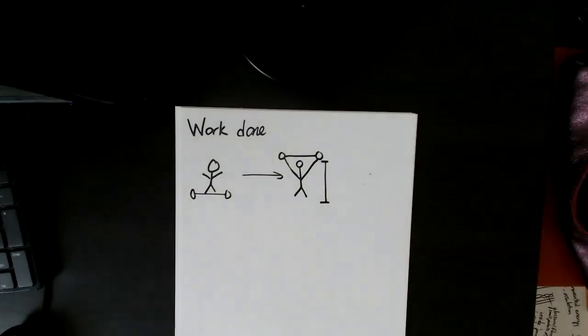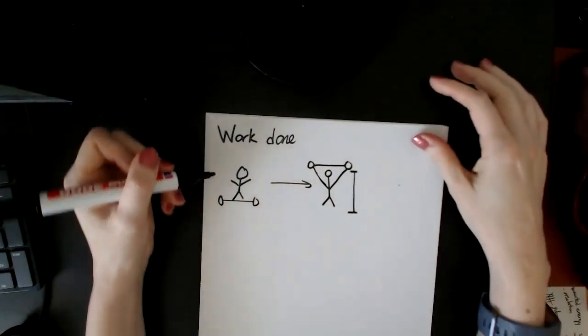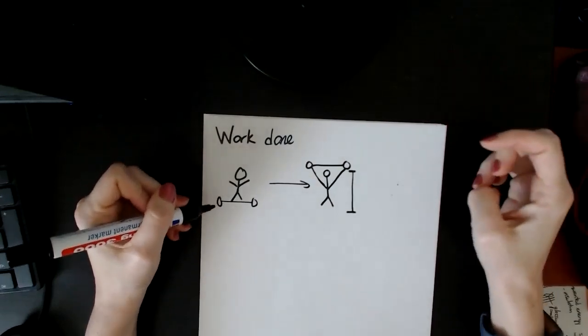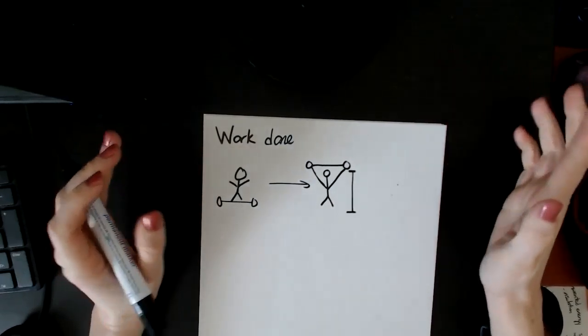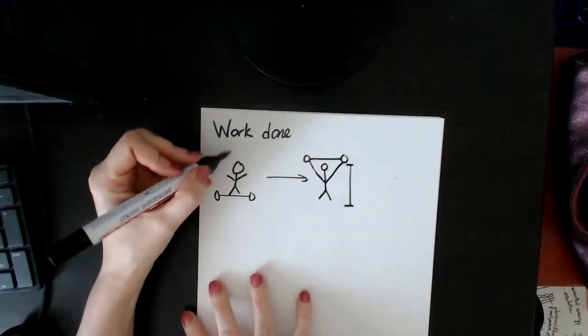All right, this is my awesome illustration that I'm going to use to talk about work done and how to think about it. So this is a person, he's working out. It's a person, and it's the same person, just pretend that the proportions are the same.